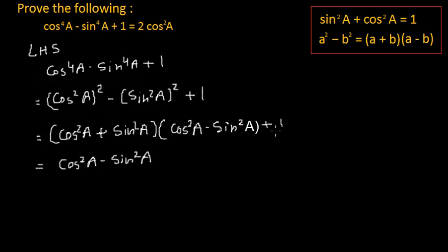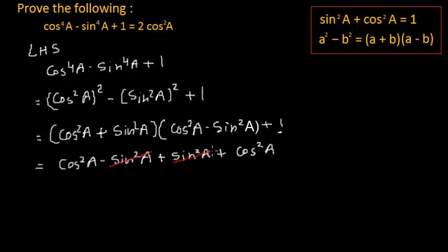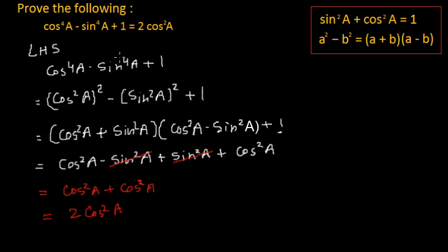In place of this plus 1, I can substitute sin square a plus cos square a. So we get cos square a minus sin square a, plus sin square a plus cos square a. The negative sin square a and positive sin square a cancel, and we get cos square a plus cos square a, which equals 2 cos square a.